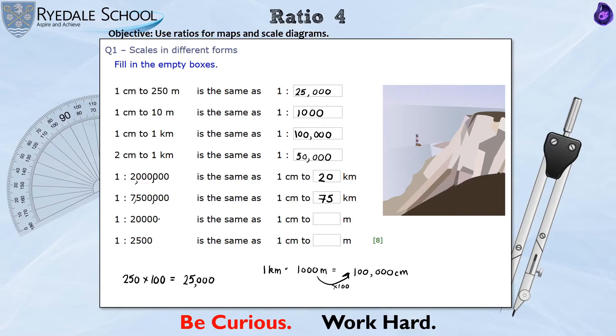Turning this one from centimetres into metres. Well I know I need to divide that number by 100 to turn it into metres. So that one would be 200. And similarly I need to divide this by 100. So turning this one from centimetres to metres would be 1 centimetre to 25 metres.